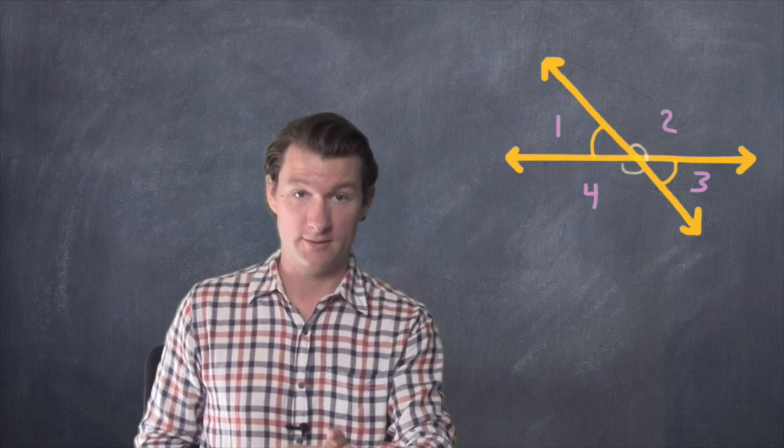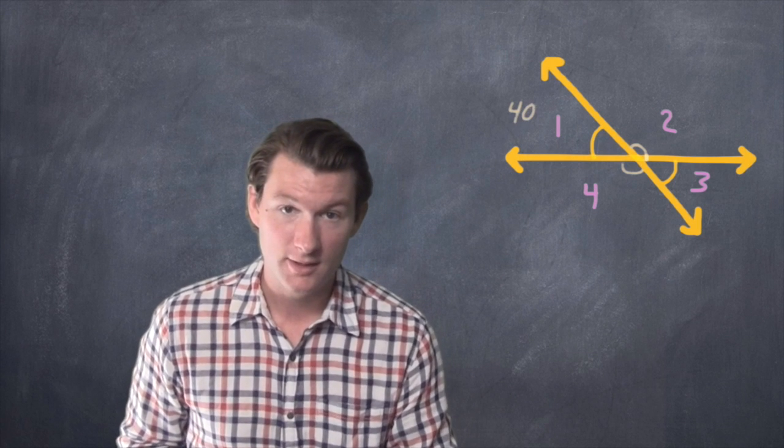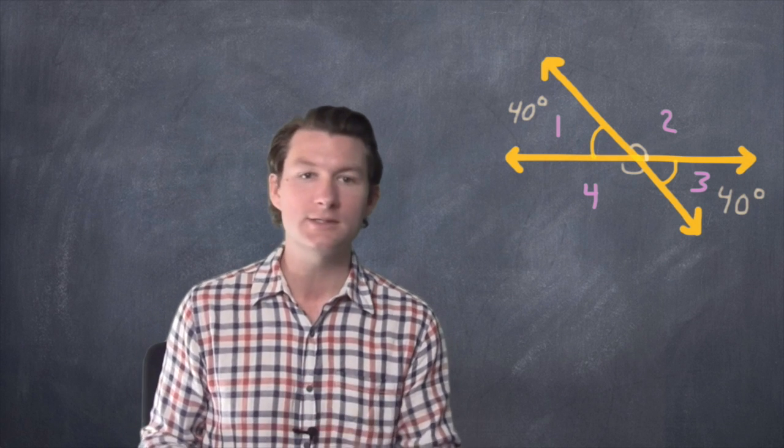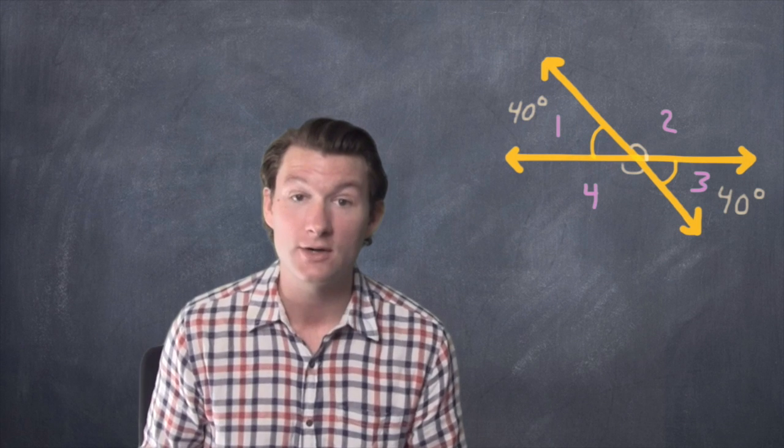And the other thing you've got to know about vertical angles is that they're equal. So let's say that angle 1 was 40 degrees.